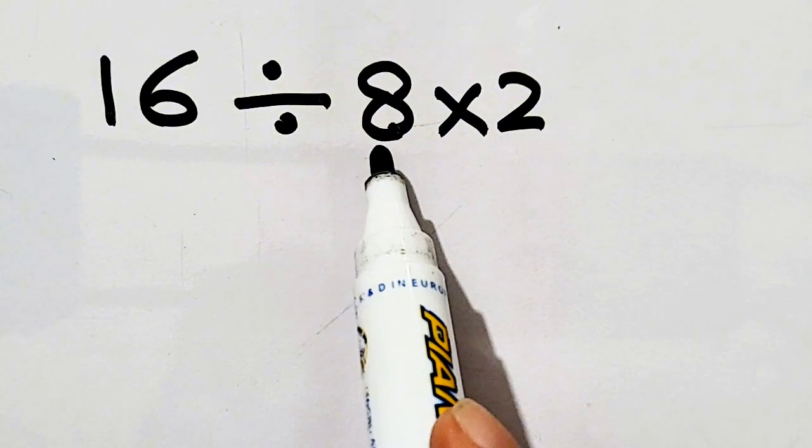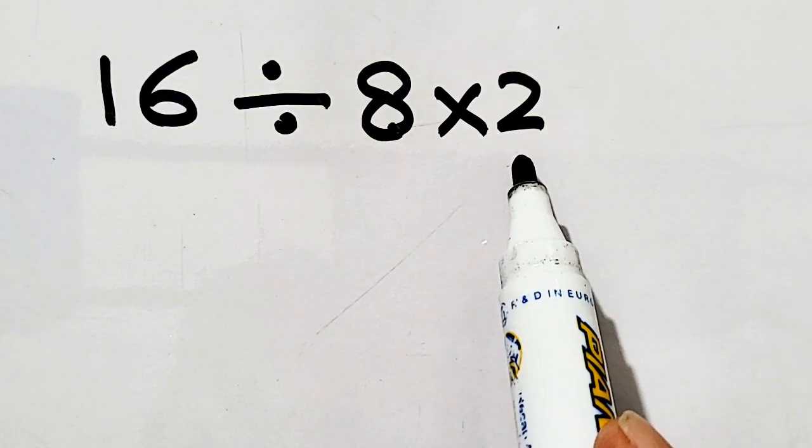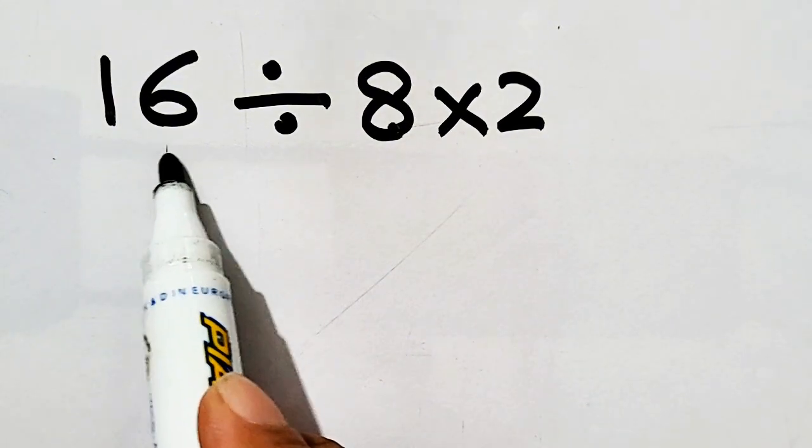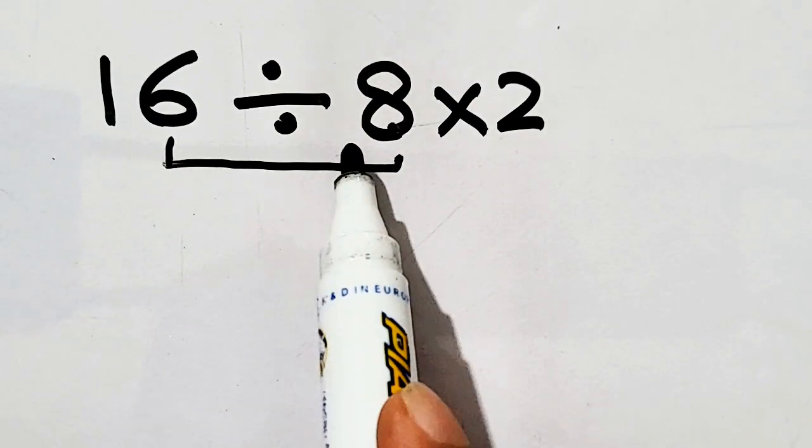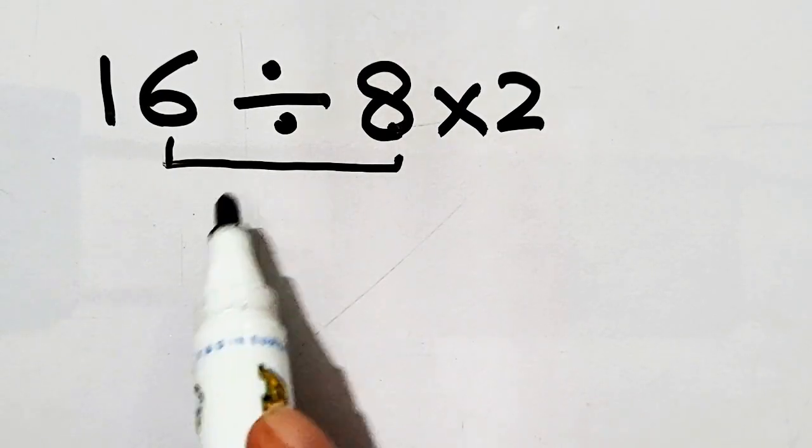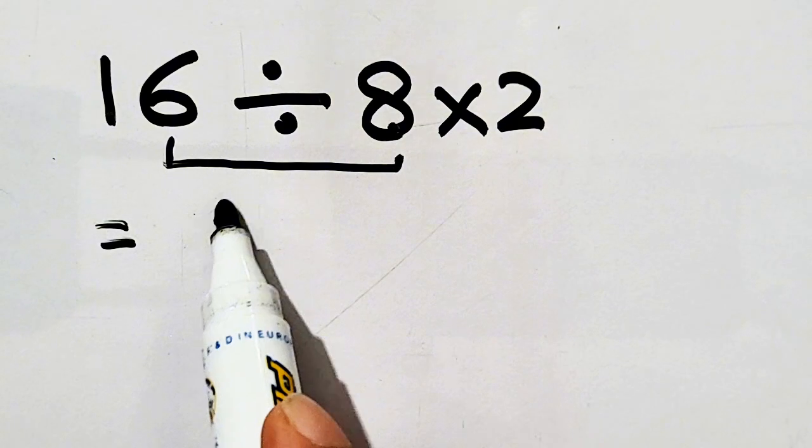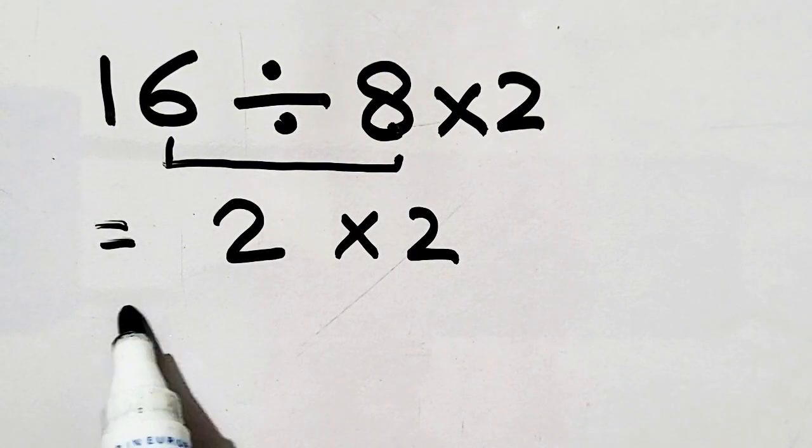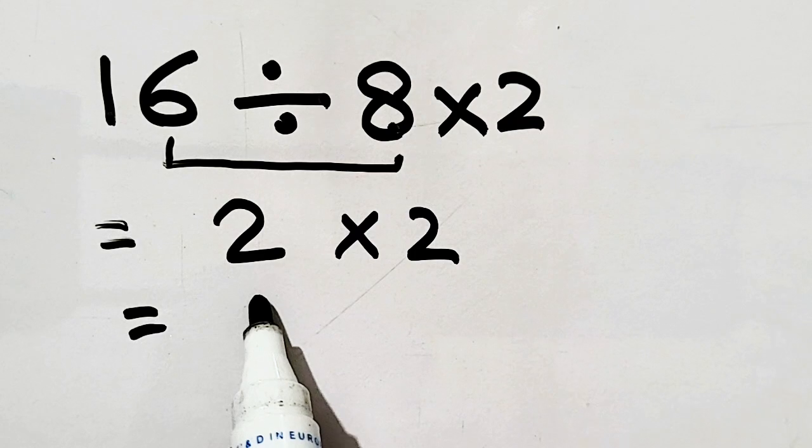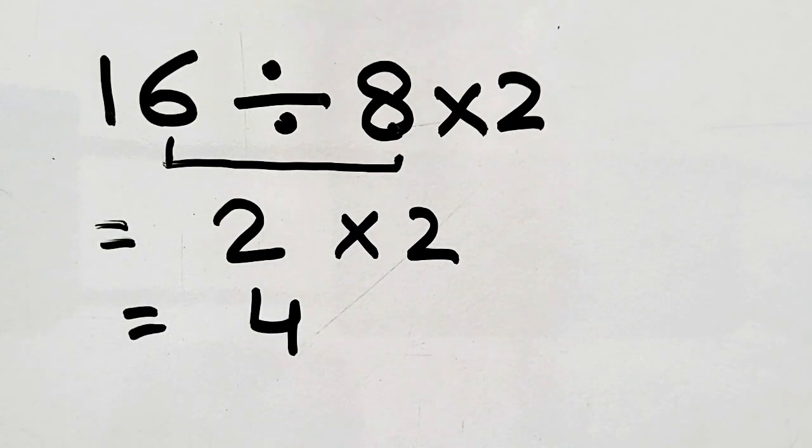Question: 16 divided by 8 multiplied by 2. So first of all, we will divide. 16 divided by 8 equals 2 times 2. So 2 times 2, our answer will be 4.